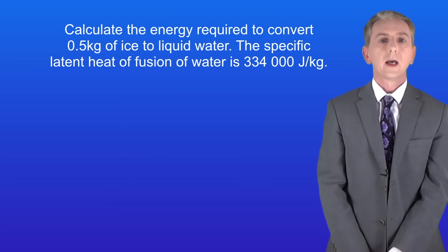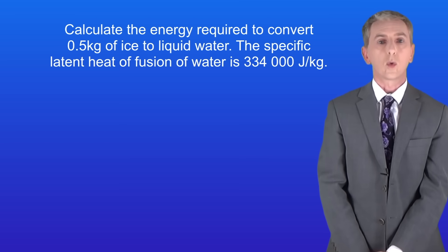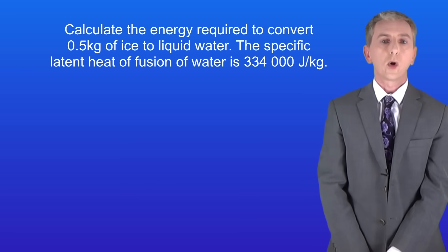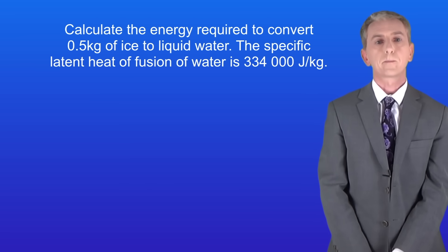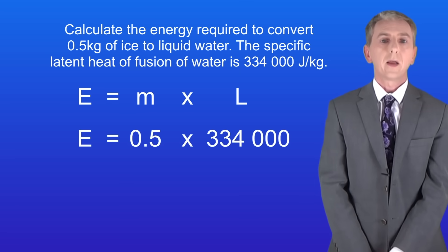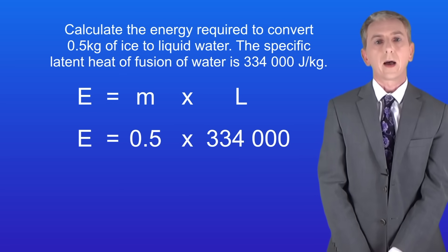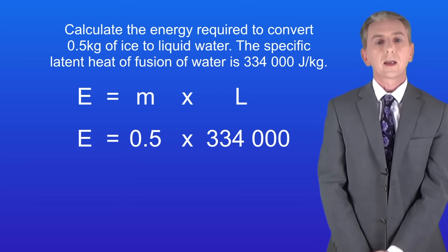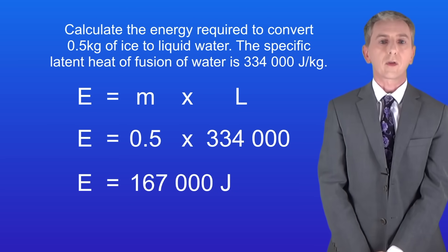Here's a question for you. Calculate the energy required to convert 0.5 kilograms of ice to liquid water. The specific latent heat of fusion of water is 334,000 joules per kilogram. Pause the video now and try this yourself. The energy for a change of state equals the mass multiplied by the specific latent heat: 0.5 kilograms × 334,000 joules per kilogram gives us an energy of 167,000 joules.